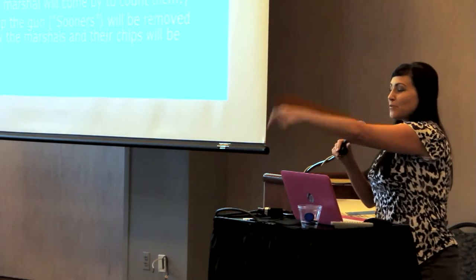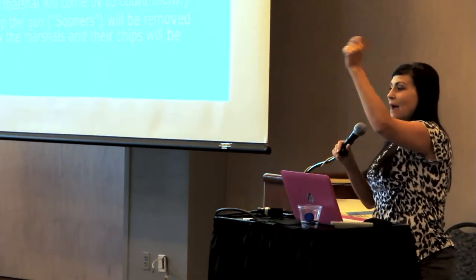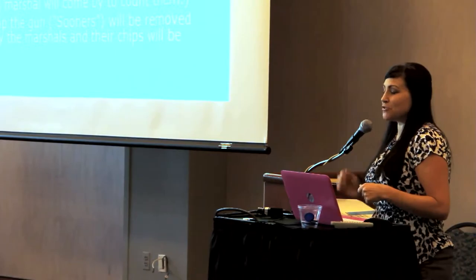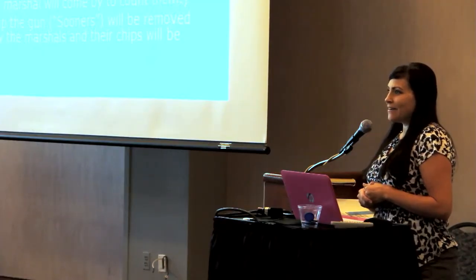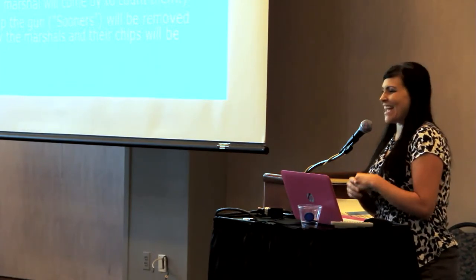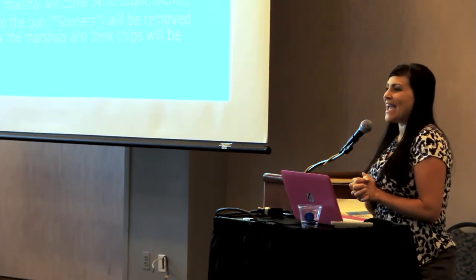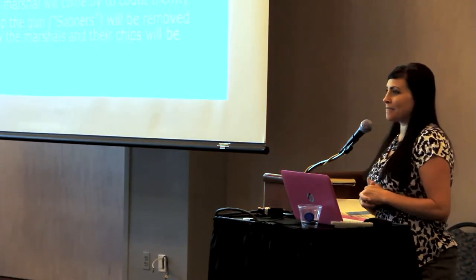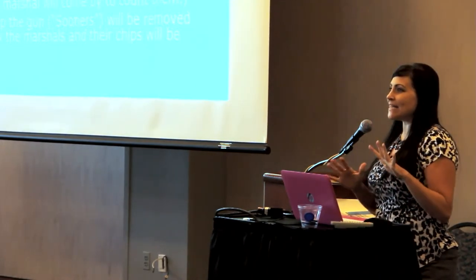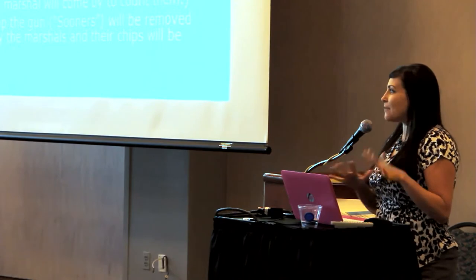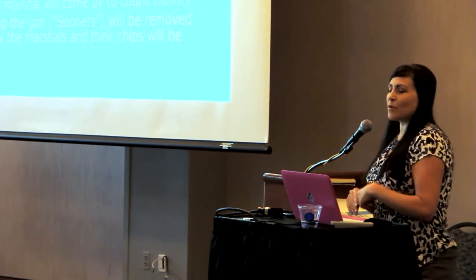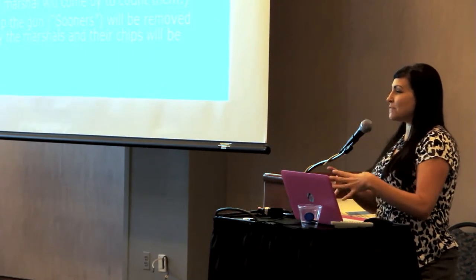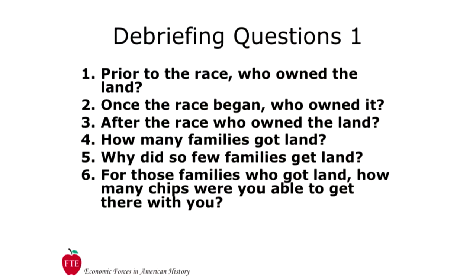For example: raise your hand if you pulled one of the flags. How many chips did you get there? Twelve. How many chips did you start with? You lost four or five along the way? And the flag you pulled was what number? One. So the flags had different numbers because not all the land was equal — some was more valuable than other land. We multiplied the flag number by how many chips they got to the table. Use the questions in the lesson materials to debrief this activity.